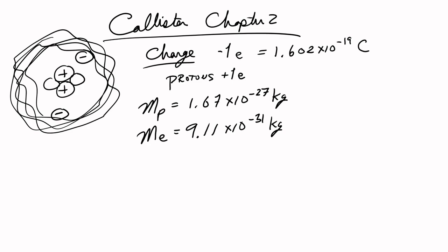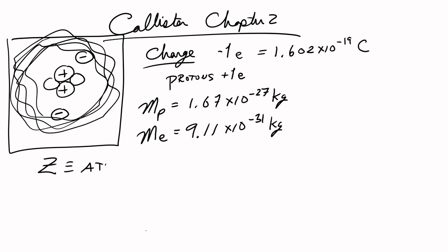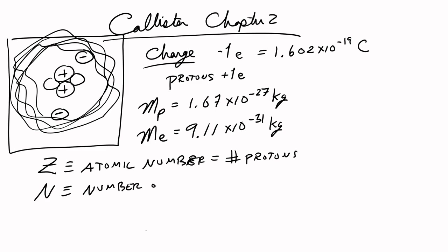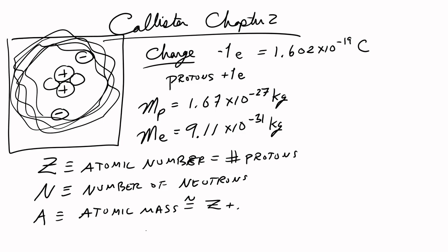When we talk about atoms, we talk about them in terms of their element, which is given by their atomic number — the number of protons — which is also equal to the number of electrons. If N is the number of neutrons, then we can approximate the atomic mass as Z plus N.